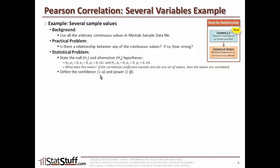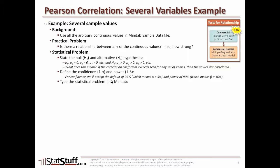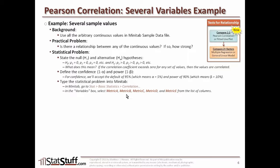We'll define the confidence and power levels using the defaults: 95% confidence level, meaning alpha is 5%, and a power level of 90%, meaning beta is 10%. In Minitab, go to Stat, Basic Statistics, and Correlation. In the variables box, select all the continuous values — Metric A, B, C, D, and E — from the list of available columns.